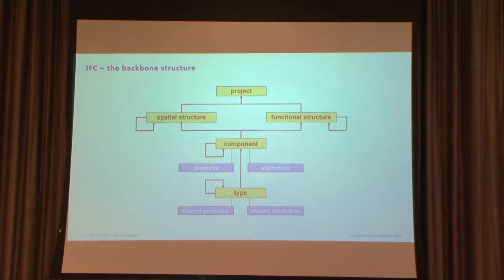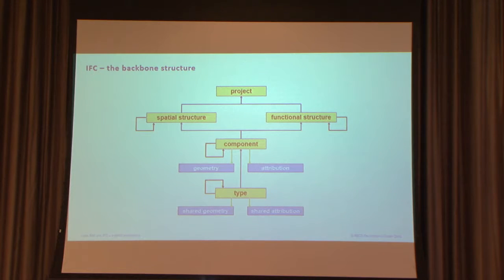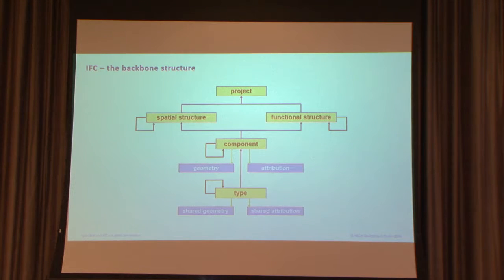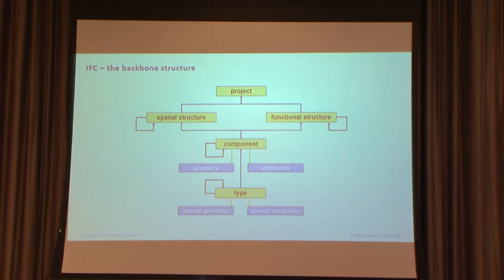On a high level, you can see the backbone structure of the IFC schema itself. Everything is related to a project — a construction project — which has metadata like units used, geographic coordinate system, and classifications. Then you can structure all BIM data either spatially, with buildings, stories, and spaces, or for infrastructure perhaps alignments and sections. You also have functional structures, such as what belongs to an electrical, structural, or HVAC ducting system.